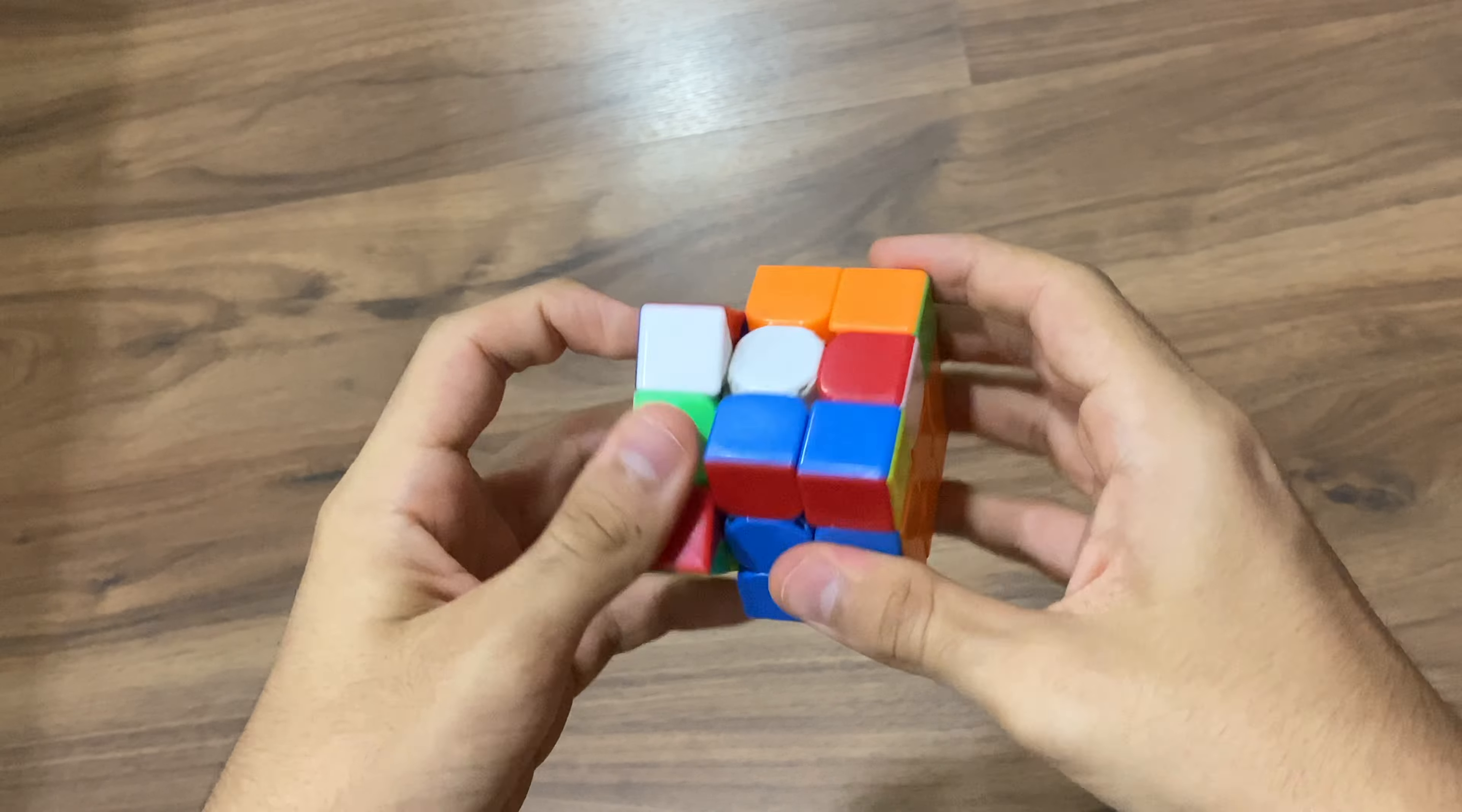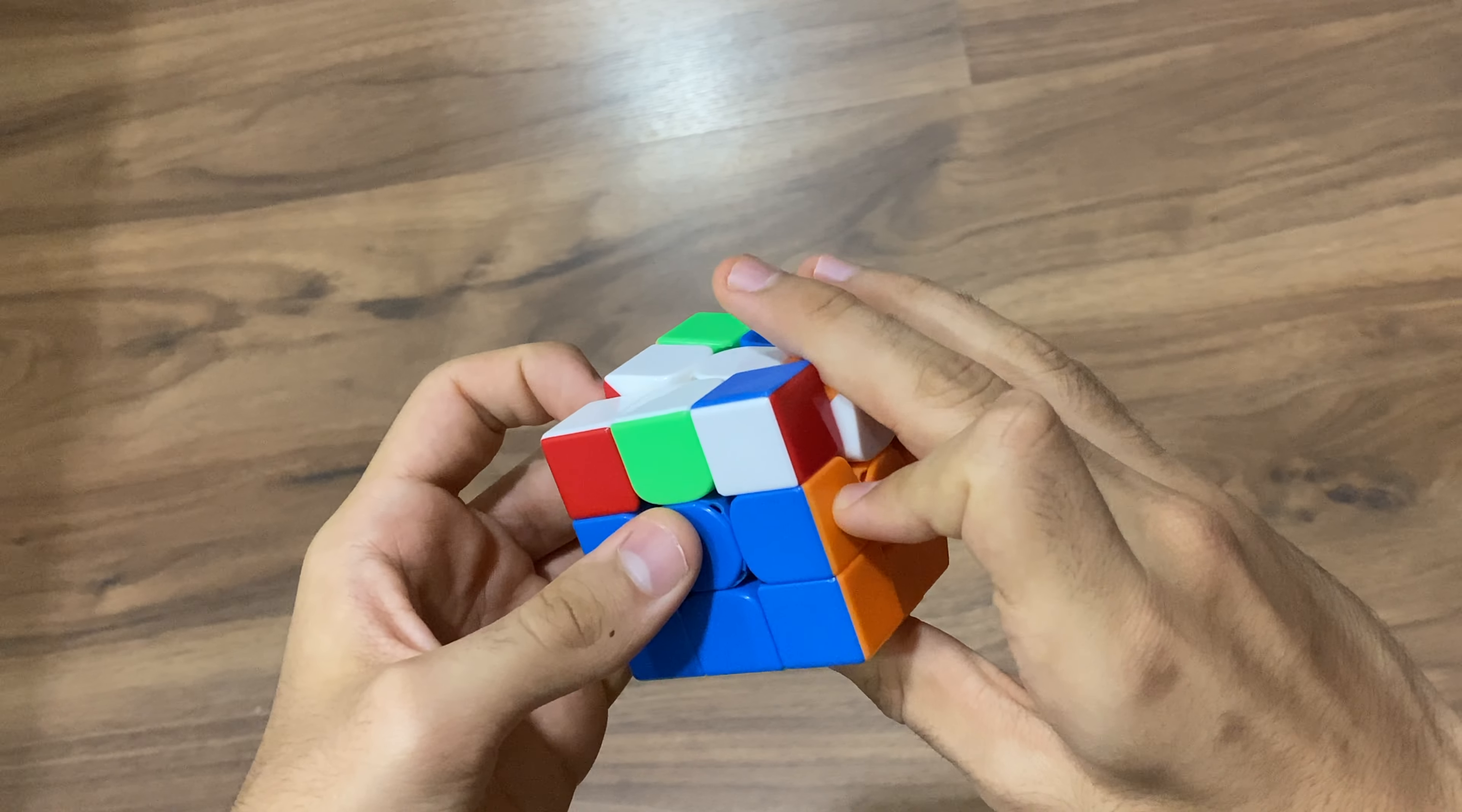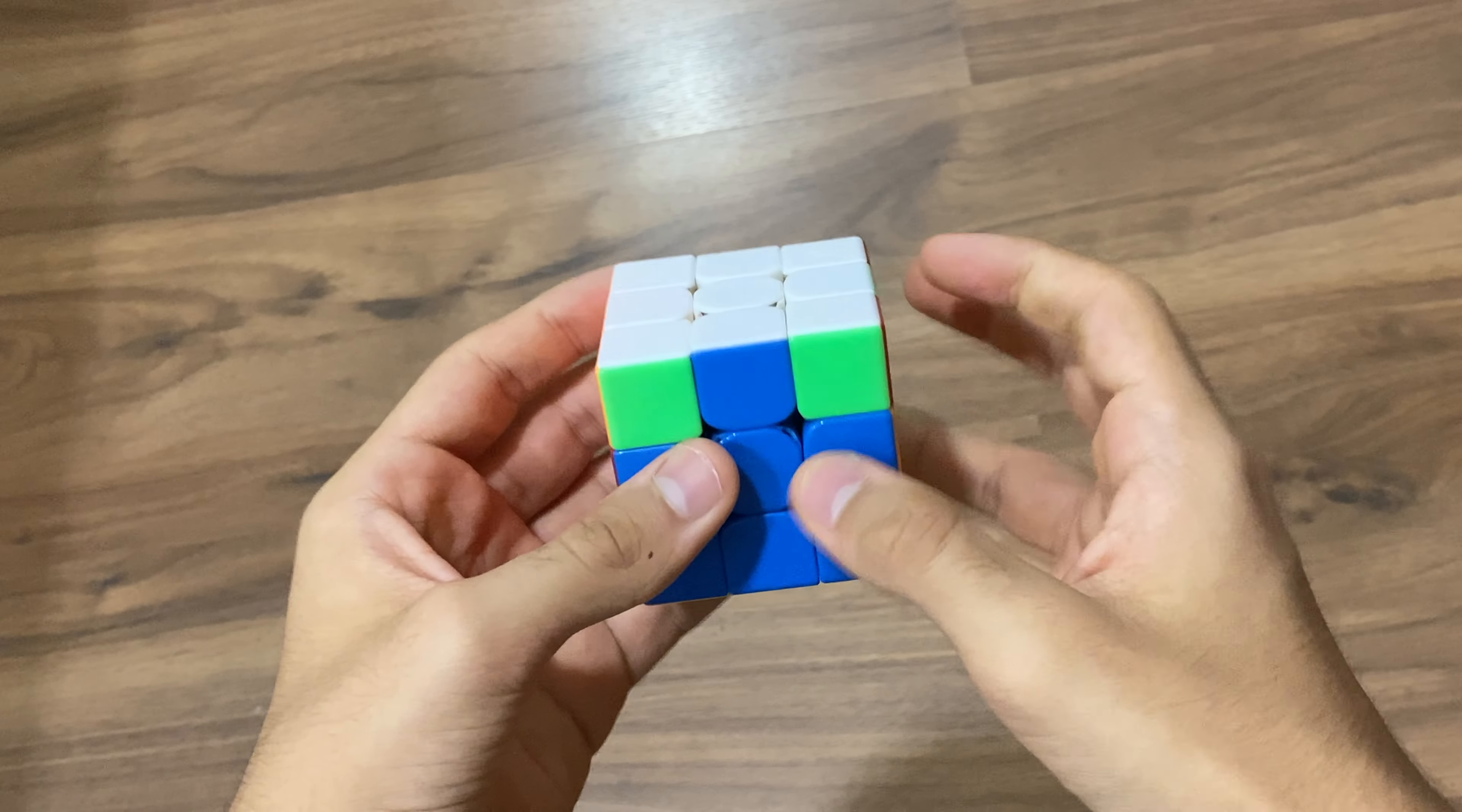I paired it up like so, and then instead of inserting it like this I did a left sledge like this to get some edges oriented. So then I did a U, left fat anti-Sune like this.